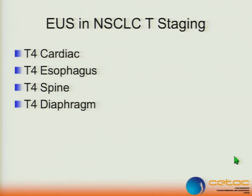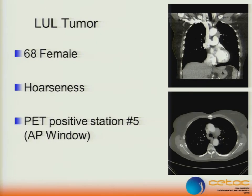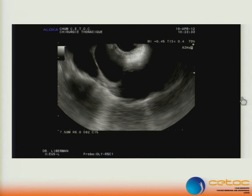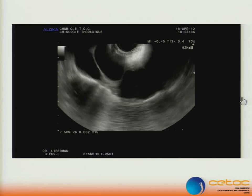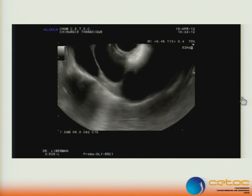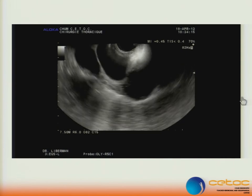EUS is also good for T-staging. If you're considering operating or sending a patient to your surgeon for a tumor that may be T4 on CT or MRI, EUS or TEE by your cardiologist might be a good way to evaluate aortic arch invasion, cardiac invasion, diaphragm, and spine. A 68-year-old female with hoarseness and a PET-positive node in Station 5 — you can see the PA, the aorta, and Station 5 labeled — we routinely biopsy Station 5 by EUS. This has been described with EBUS as well in a transvascular approach, but with EUS you don't have to hit any vessel — you can go right between the aortic arch and the PA.